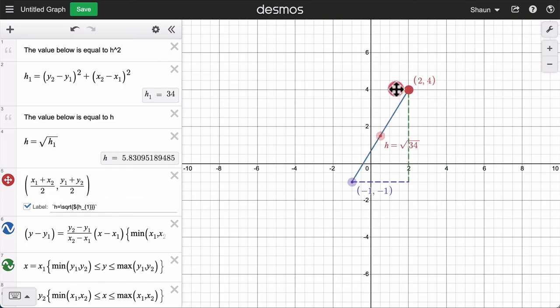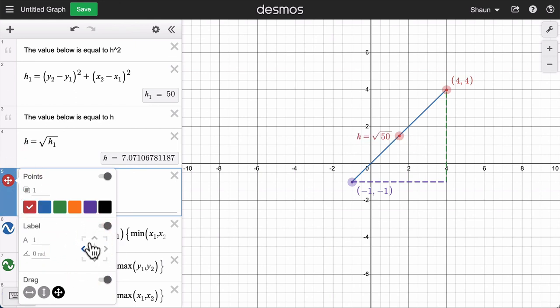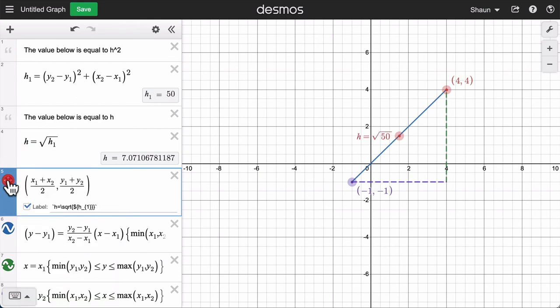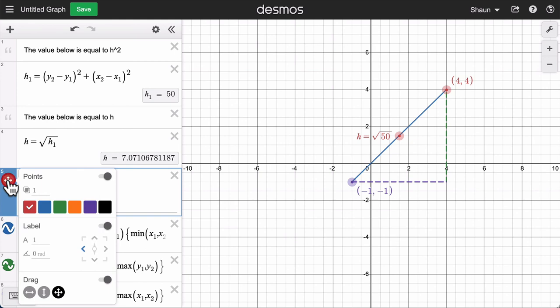And as I move this around, you'll see it calculate the distance of the hypotenuse. And that's pretty much it. I would just, I would hide this point. And let me just change the location of the label. I'd probably put it on the outside over here. And then I think I'm done.